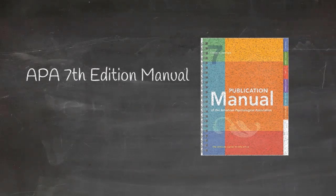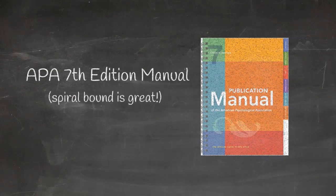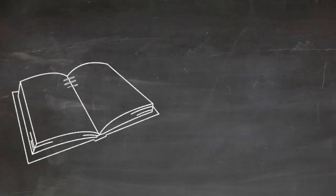One little pro tip if you're in the market to buy yourself a copy of the publication manual is that I would recommend that you get the spiral-bound version of it. This is something that I learned from one of the professors here at Western.